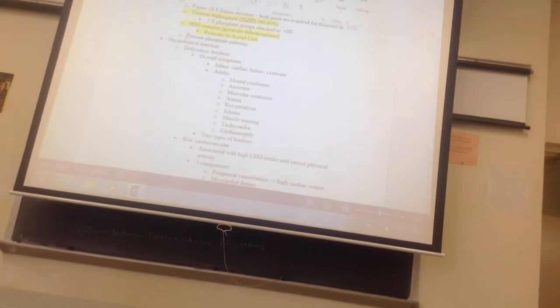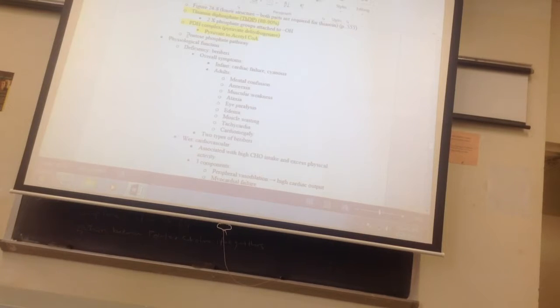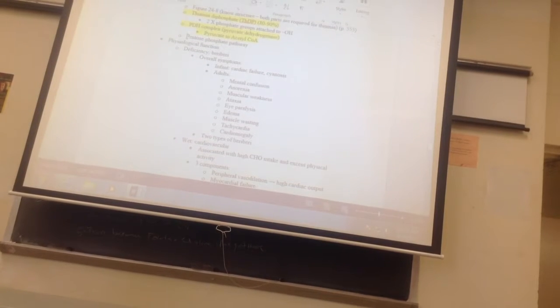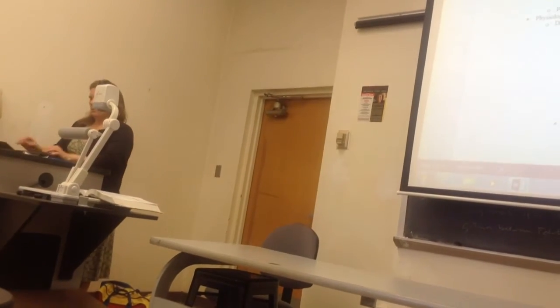And it also is in the pentose phosphate pathway, so let's go back to DNA, right? So, the ribonucleic acid is based on ribose. Ribose is a five carbon sugar. Pentose phosphate pathway is the...